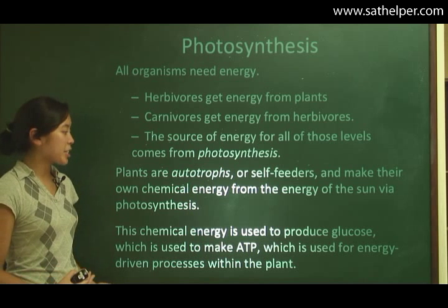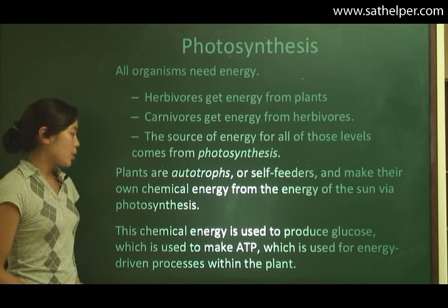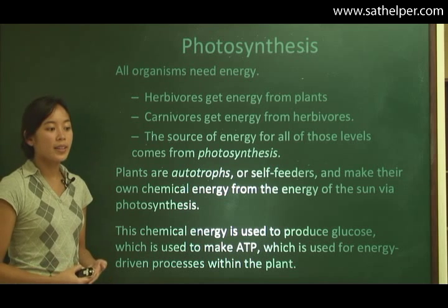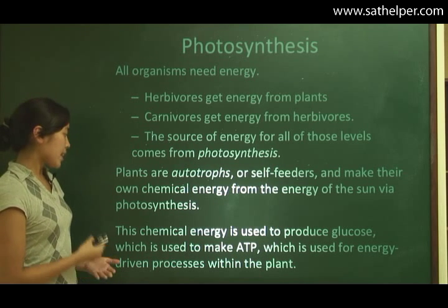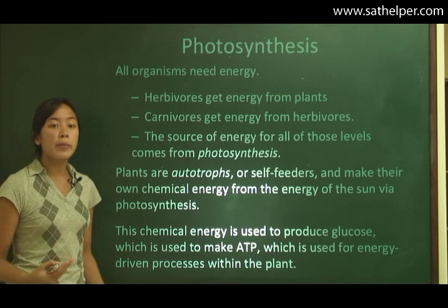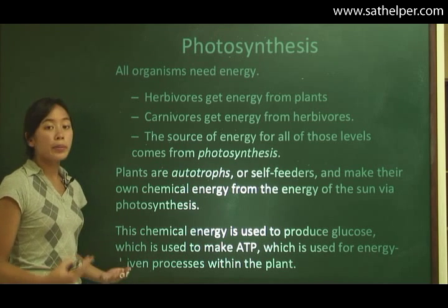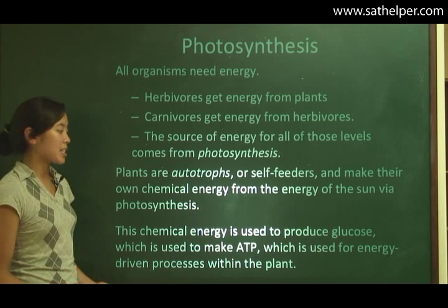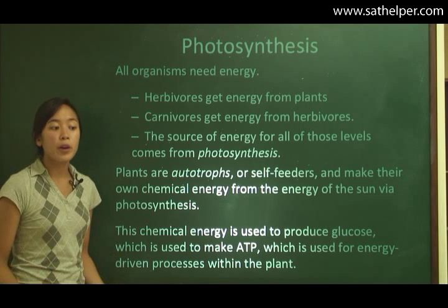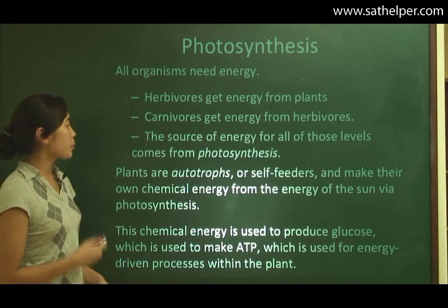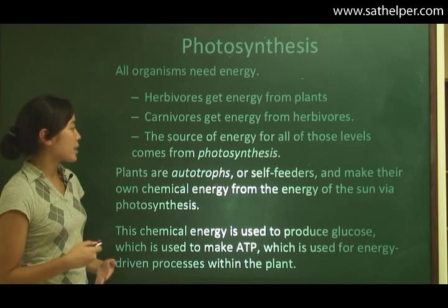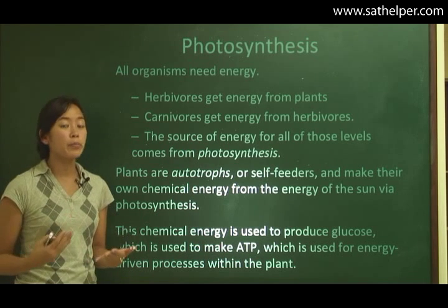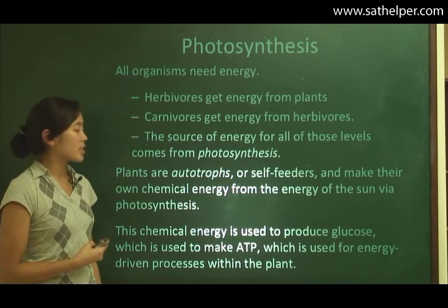This chemical energy is used to produce glucose, which is then used to make ATP, which is used for energy-driven processes within the plant. In a nutshell, photosynthesis is using chemical energy to make glucose, and then the plant will use this glucose to make ATP through cellular respiration, which we already learned about, to drive the processes within the plants. I mentioned earlier that plants are autotrophs, and they get their chemical energy from the sun. There are also some prokaryotes that get their energy through photosynthesis as well.